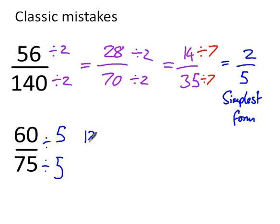Okay, so dividing both of those by 5, I get 12 over 15. And then they say, right, okay, well, can't simplify any further. 12 over 15, we've got an even number and an odd number.